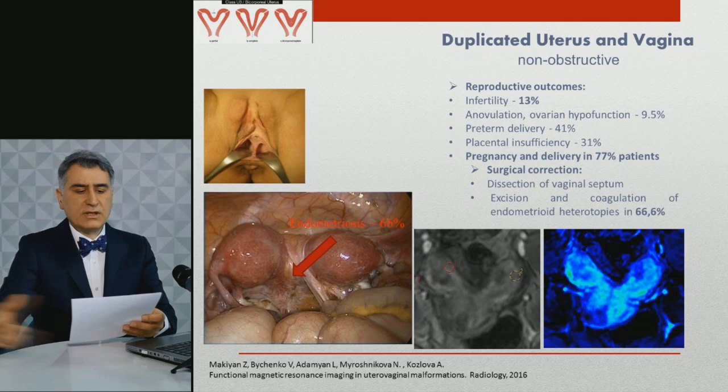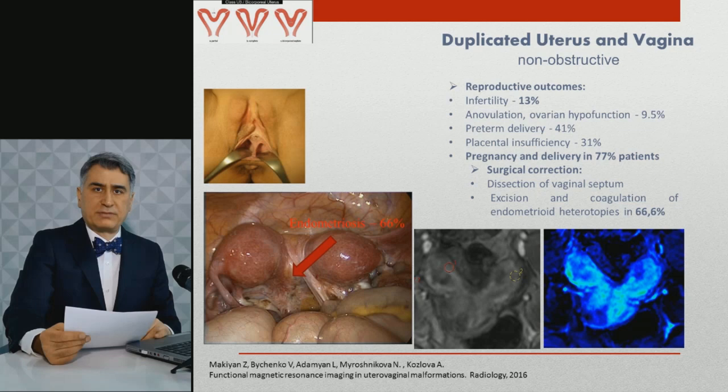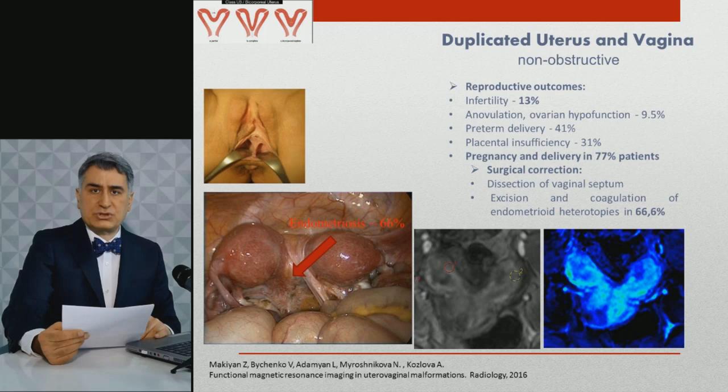Fusion defects of the Müllerian ducts result in symmetric malformations such as double uterus, bicornuate, and subseptate uterus. Clinical cases of completely duplicated uterus and vagina possibly arose during developmental stages before fusion of the Müllerian ducts. Optimistic reproductive prognosis was observed in half of cases with double uterus, which depends on uterine blood supply.